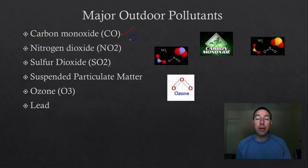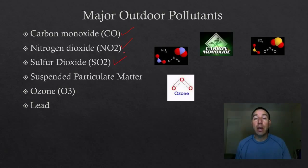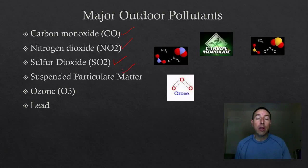Nitrogen dioxide — also called nitrite — gets up in the atmosphere and can combine with other things to cause acid deposition. The same thing happens with sulfur dioxide, which is created when we burn fossil fuels and can mix with water in the atmosphere to cause sulfuric acid. There are also particulates — suspended particulate matter like dust, soot from coal burning, and pollen — which are all issues of particulates out in the atmosphere.